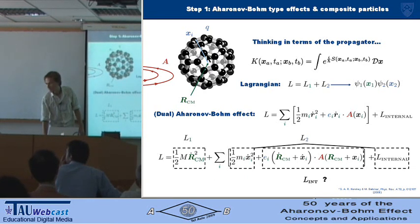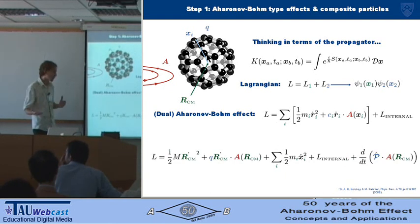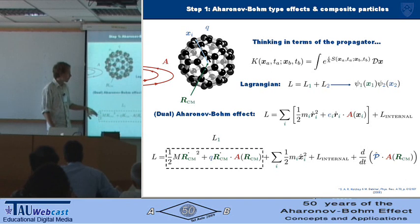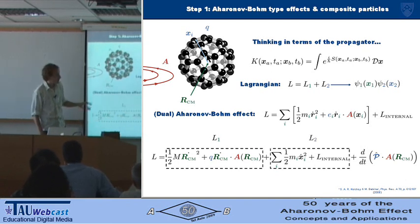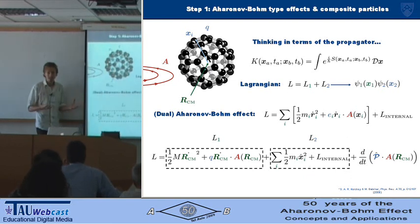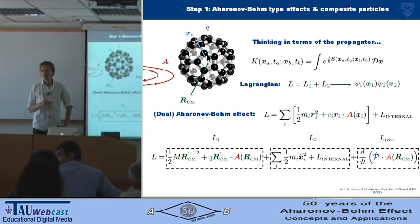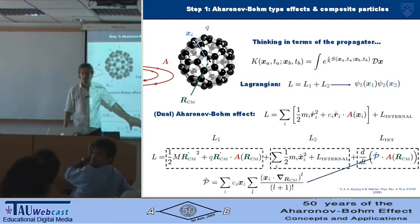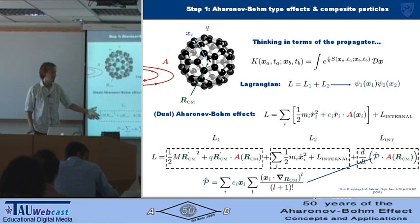However, this isn't quite true, because when we expand the vector potential around the centre of mass, the Lagrangian takes a different form. It ends up being what you'd have for a free particle of charge Q in the centre-of-mass Aharonov-Bohm phase, plus an internal Lagrangian which is just the internal kinetic energy and the Lagrangian binding the whole thing together. And all of the interaction is locked up in the total time derivative, containing this quantity P-hat, which in general is the dipole moment, but it also contains all the quadrupole moments and everything else.